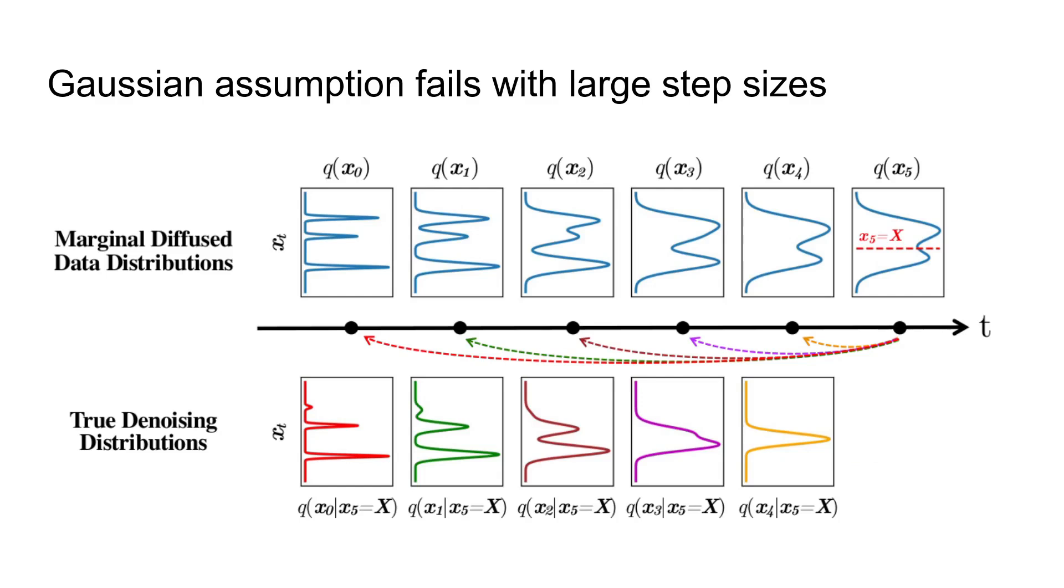When you increase the step size in order to speed up the sampling, the gaussian assumption unfortunately fails. In this example, a 1D data distribution is demonstrated through the diffusion process. x_0 is the original distribution and x_5 is the end of the diffusion process. If you want to revert only one step of the noise, you can safely make the gaussian assumption. Here the denoising distribution is shown in yellow when the step size equals one.